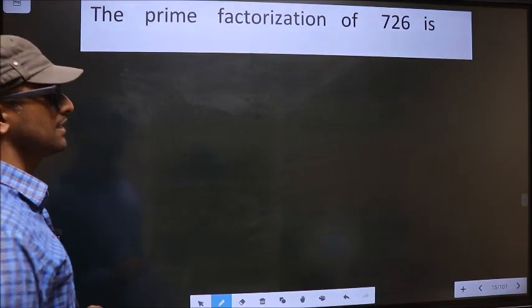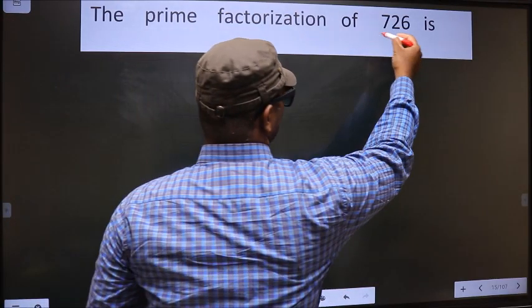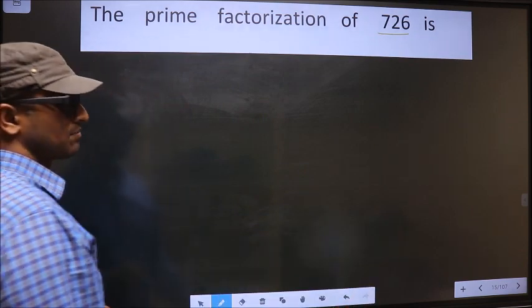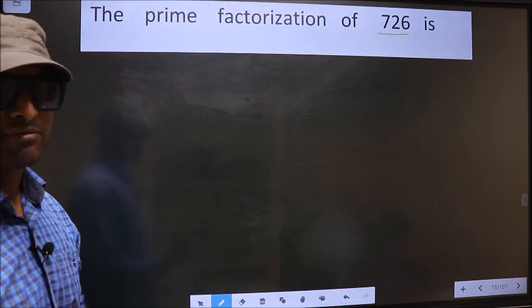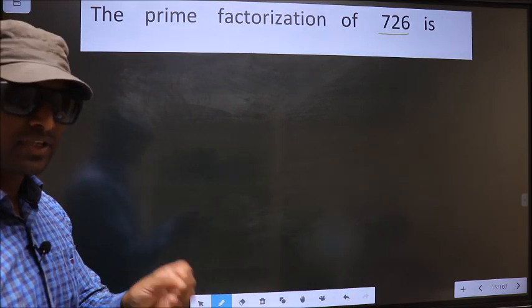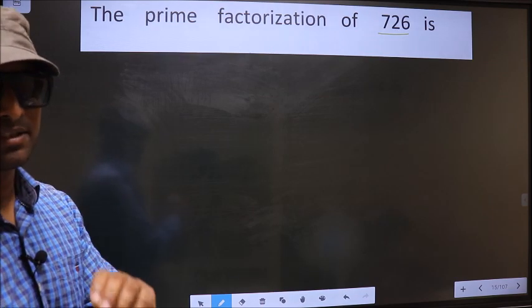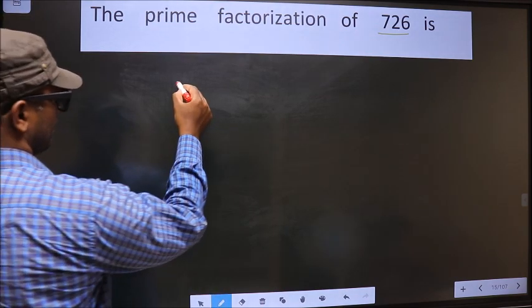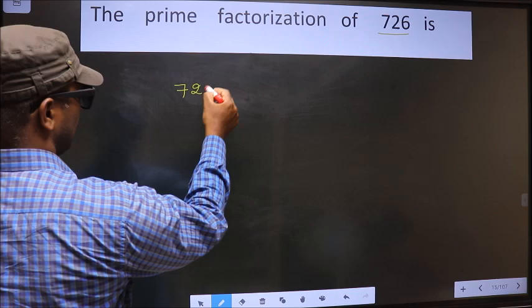The prime factorization of 726 is... To do the prime factorization, first we should frame it in this way: 726.